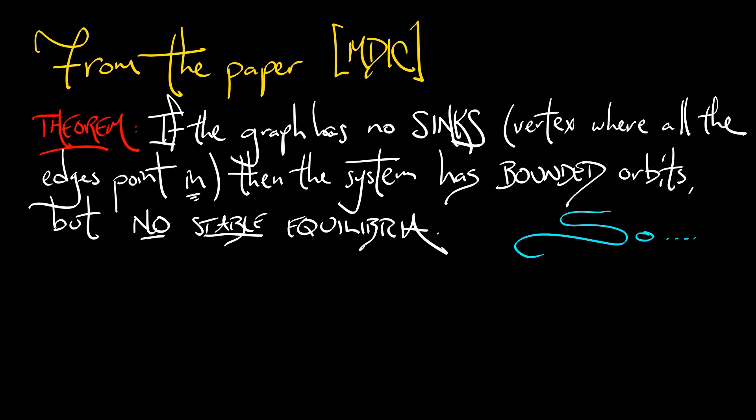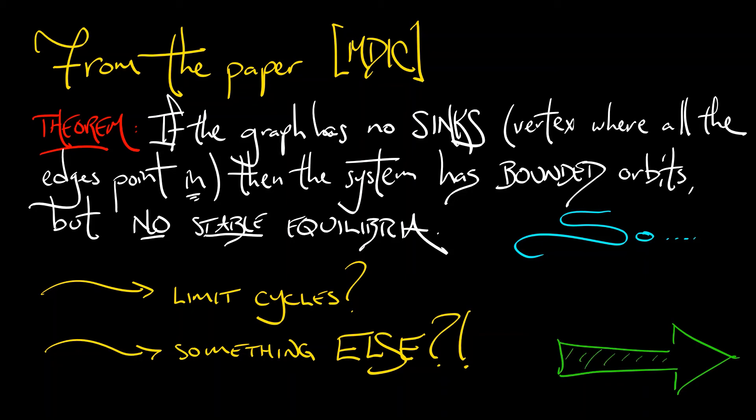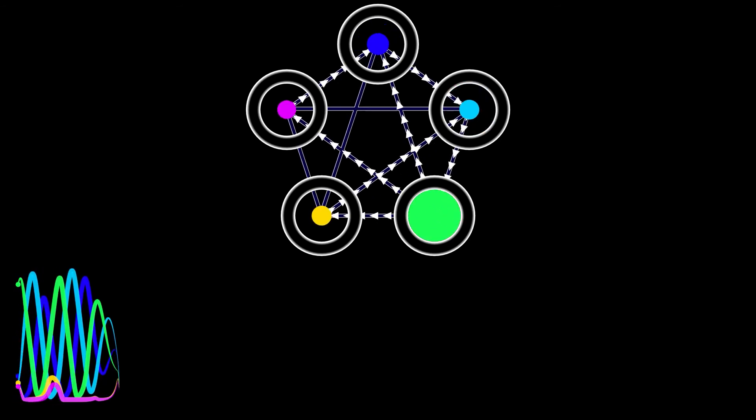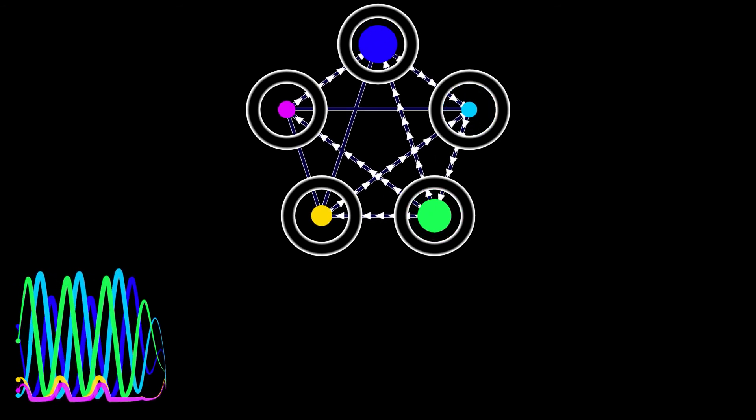If this were a two-dimensional system, Poincaré-Bendixson would tell us that you've got to have a limit cycle in there, but these are not two-dimensional systems. So maybe we get something else besides limit cycles.